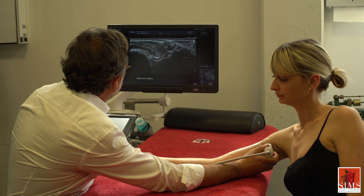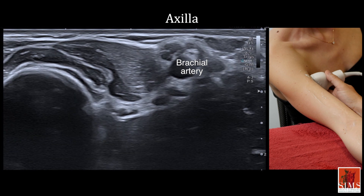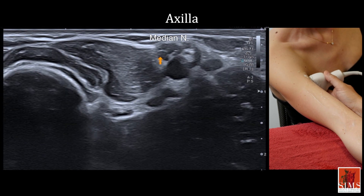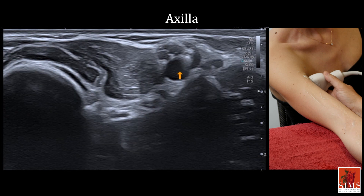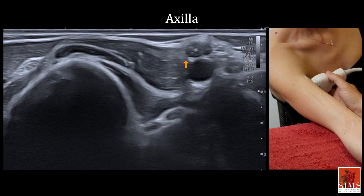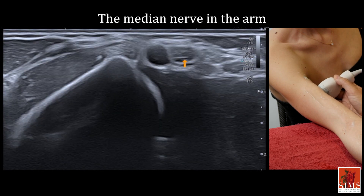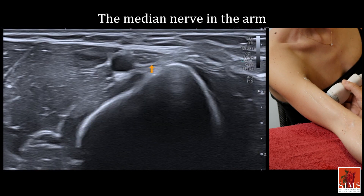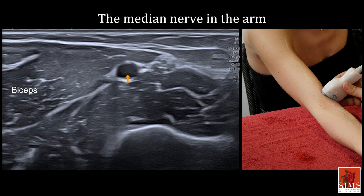In the axilla and arm, we are going to use the axillary and brachial arteries as a guide to follow the median nerve, which in the axilla is the most anterior nerve to the axillary artery. We then move along the arm using the elevator technique. The median nerve remains a satellite of the brachial artery until it reaches the elbow.